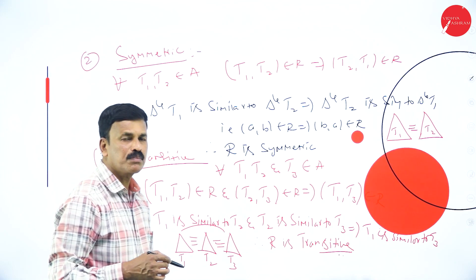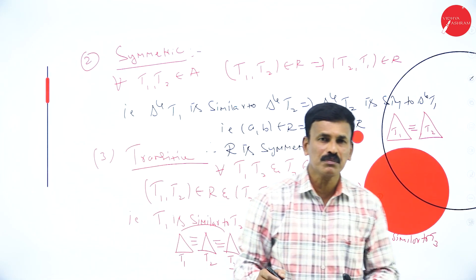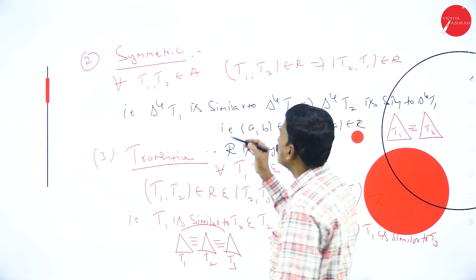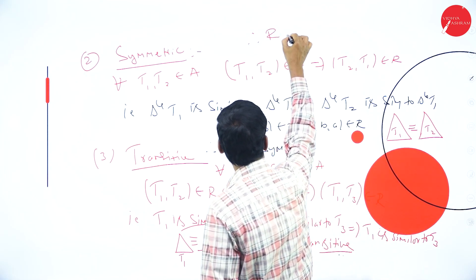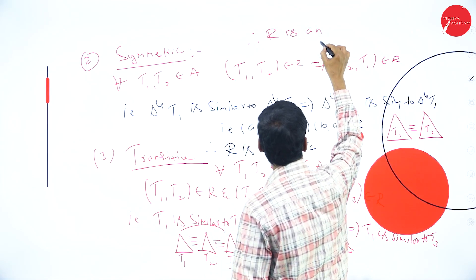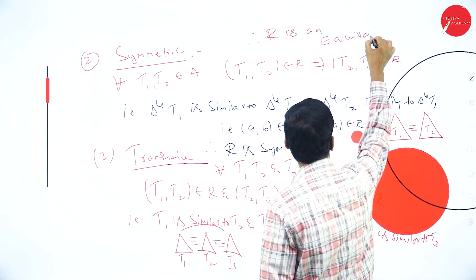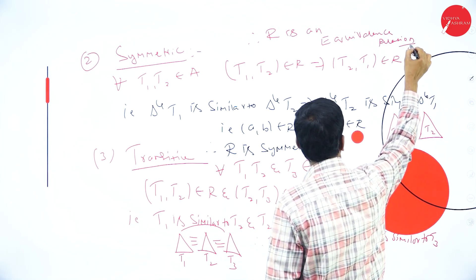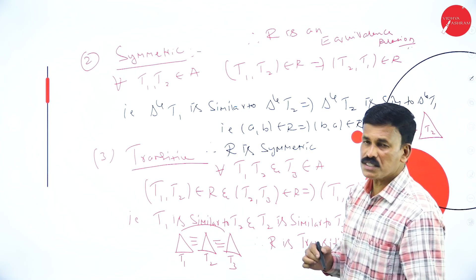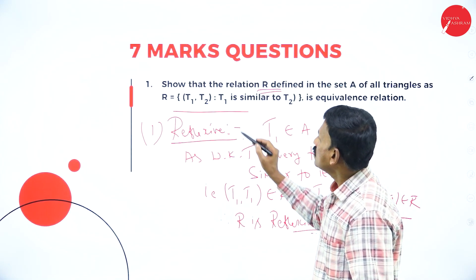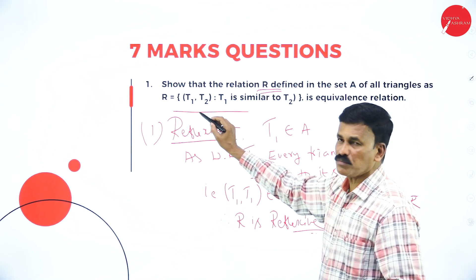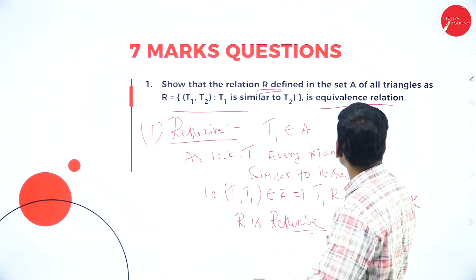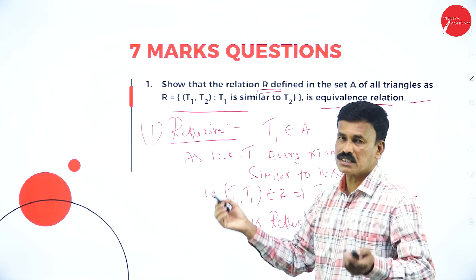All three properties are satisfied: reflexive property, symmetric property, and transitive property. Therefore R is an equivalence relation. That is, on the set of triangles defined by R = {(T1, T2) : T1 is similar to T2} is an equivalence relation.